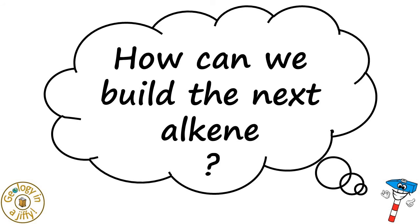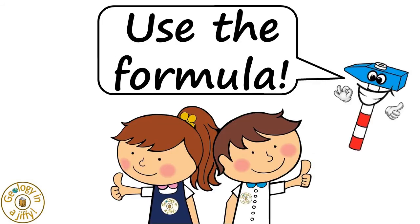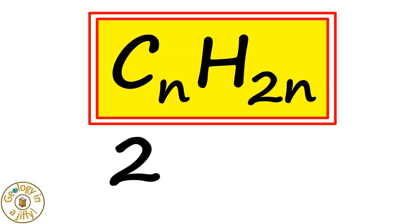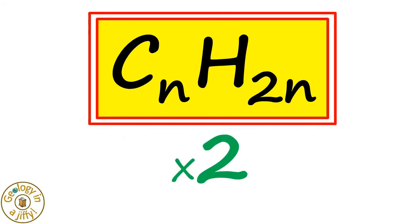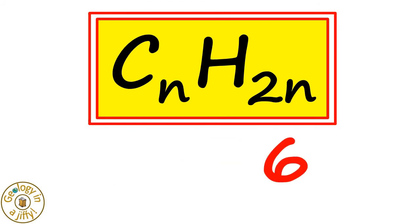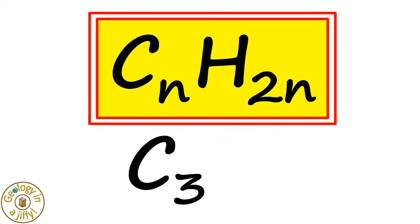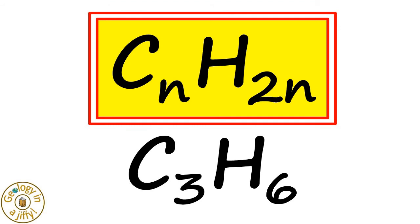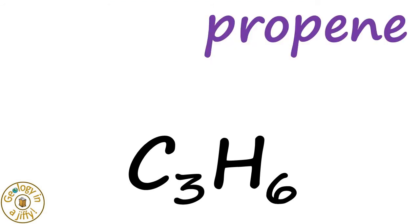How can we build the next alkene? We can use the formula. Knowing that ethene, the simplest alkene, has two carbons, the next alkene must have three carbon atoms, and three times two is six, so the formula is C3H6, which is propene.